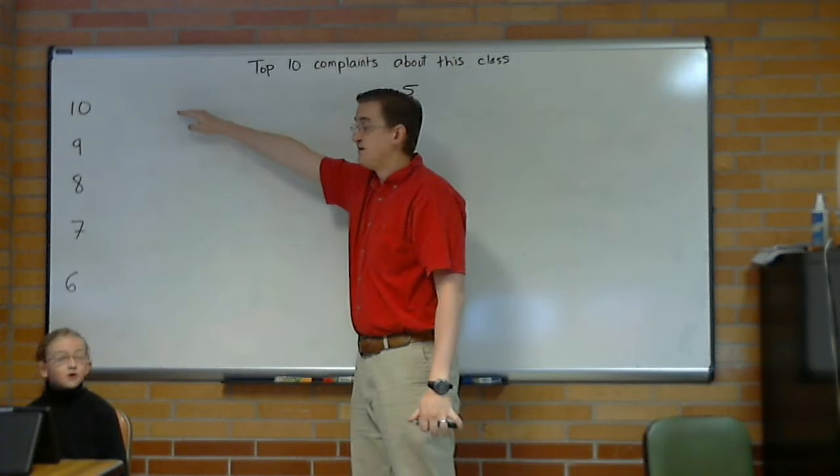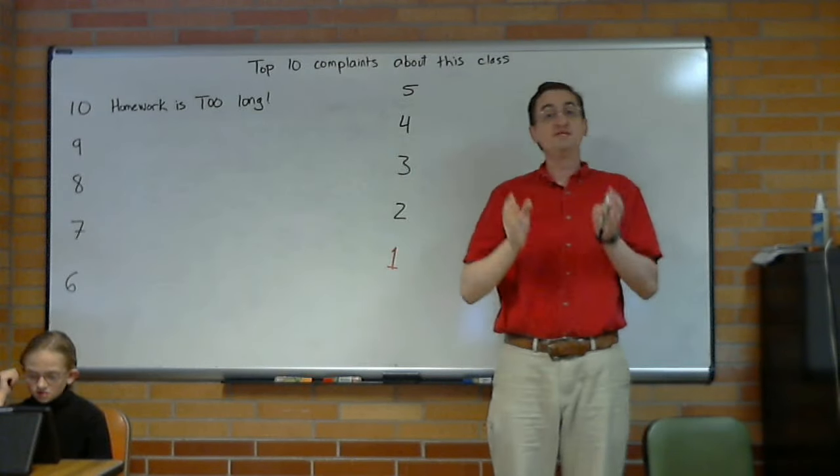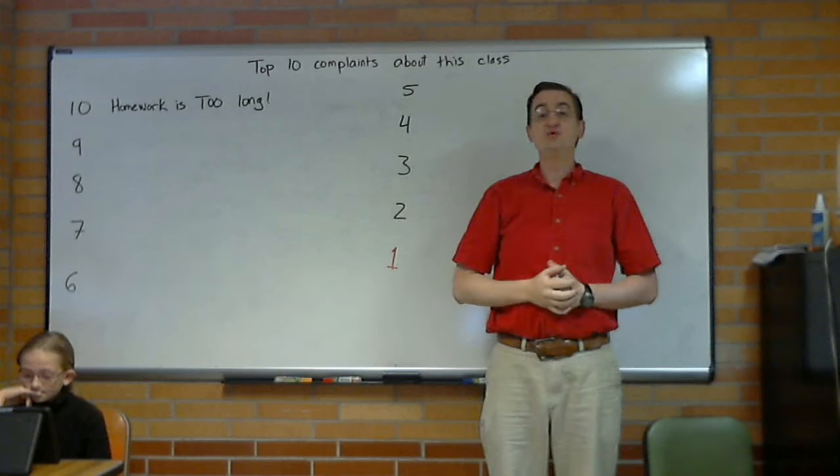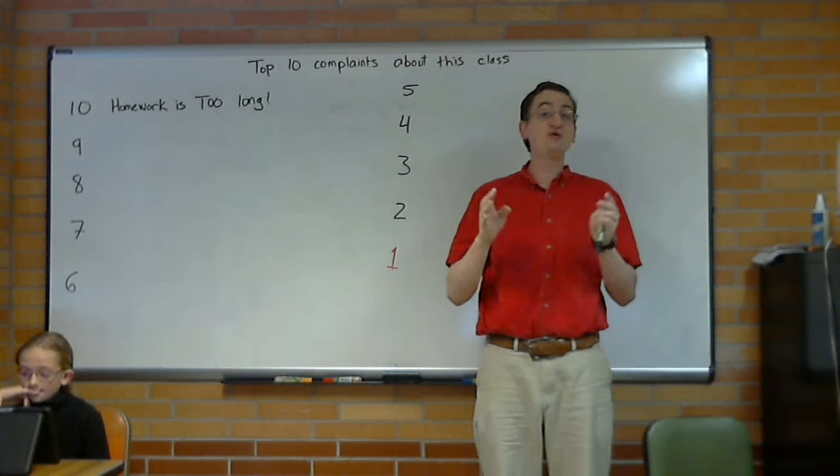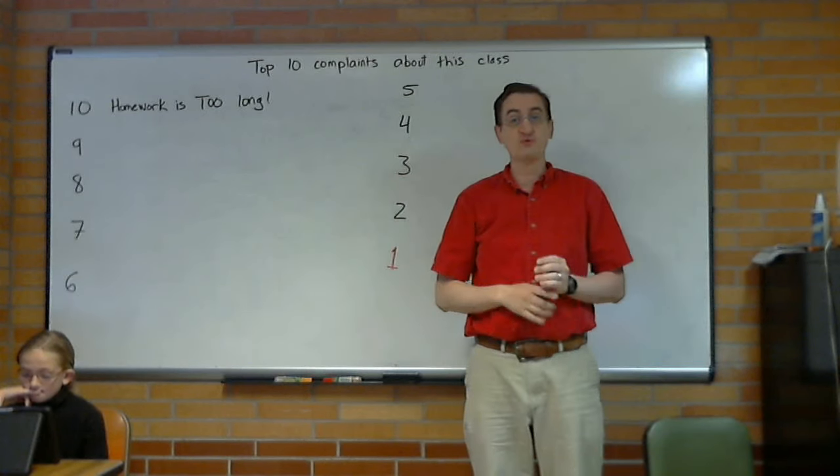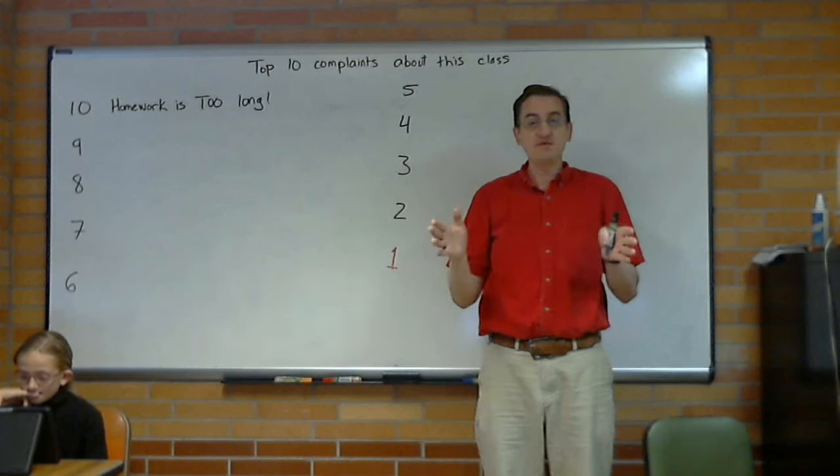Number 10: The homework is too long. Okay, I understand. But this is a four credit science class at a state university. You can expect it should take some time. According to university rules, you should spend 16 hours per week on homework. That's not going to happen, but you will want to block out a couple of hours.